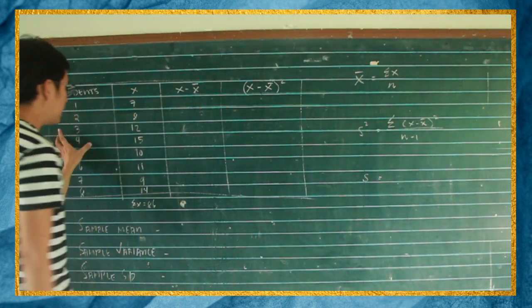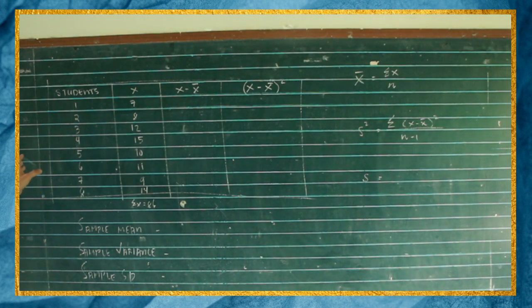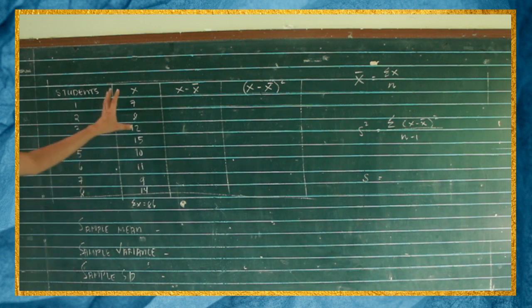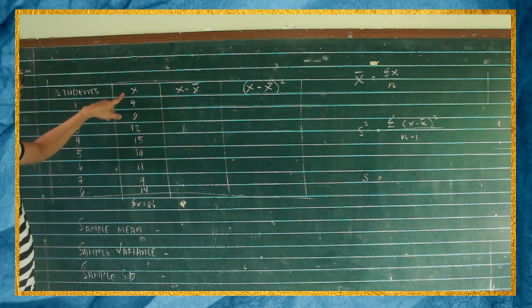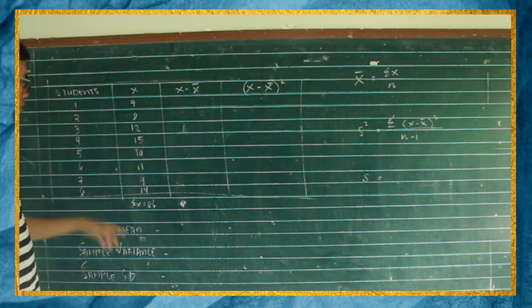So given naman lagi, hindi naman kayo makapagolong yung sample mean kung wala kayong raw score. So in our table, given na yung mga raw scores nila, and then that is written in this column, sa column ng x. So si student 1 got 7, 8, 12, 15, 10, and so on.